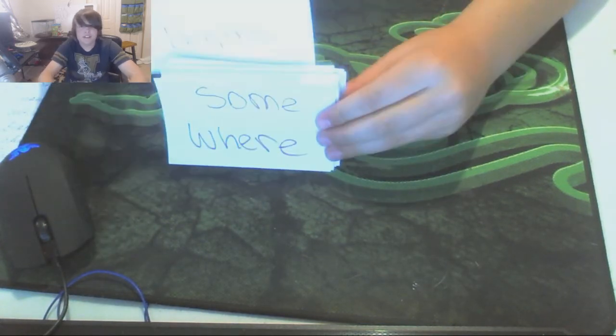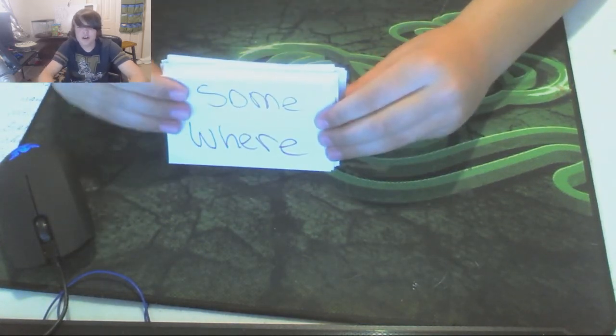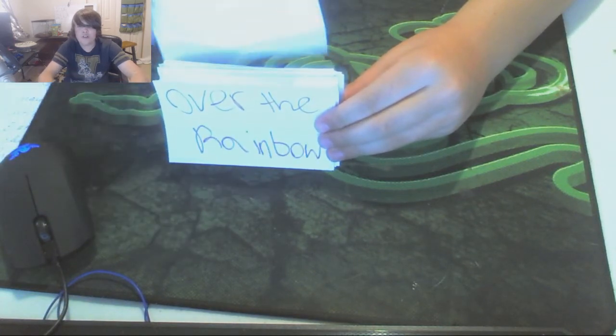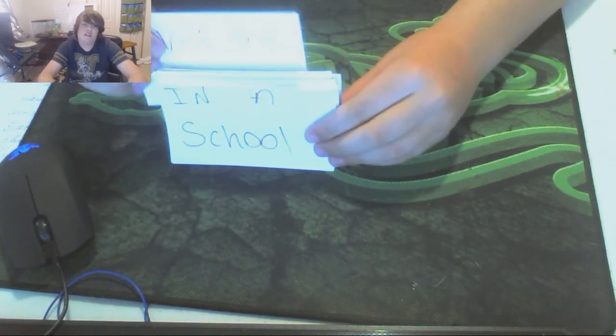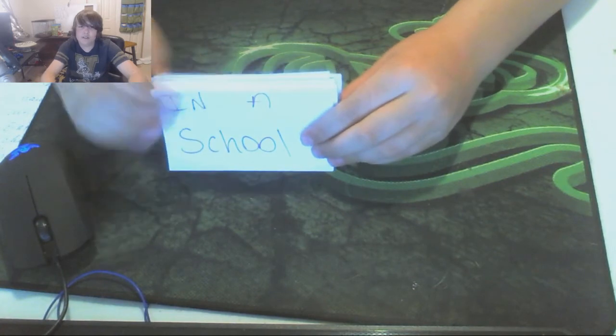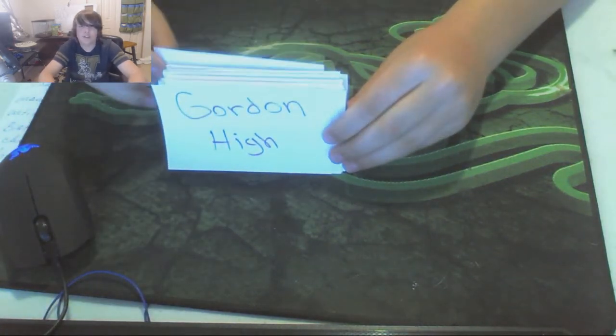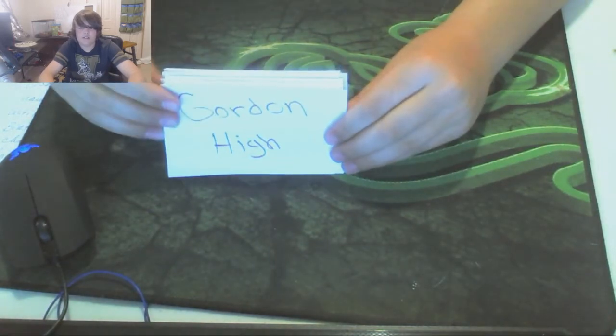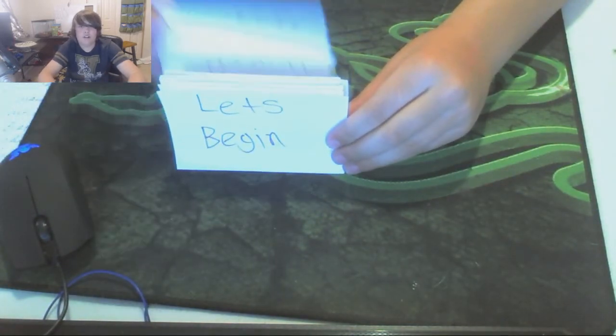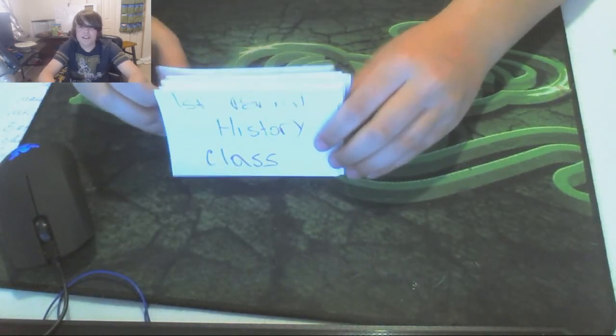The book begins, somewhere over the rainbow, in a school called Gordon High. Let's begin, first period history class.